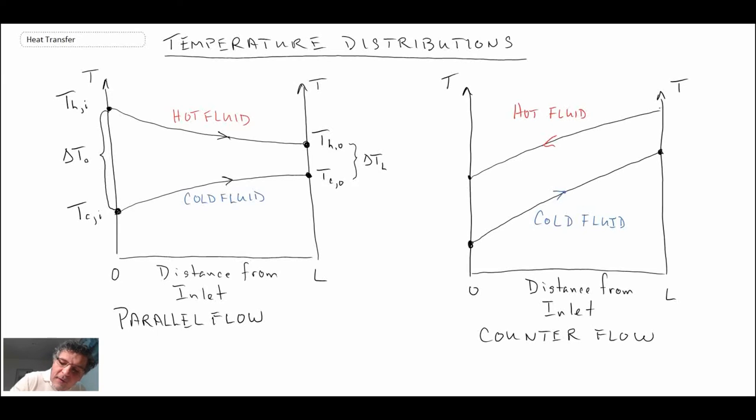So for this one, I would call this one T_hot_in and this would be T_hot_out. And then this would be T_cold_in and T_cold_out. And so that's a nomenclature that you'll see when I'm solving problems in an upcoming lecture.